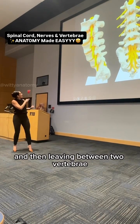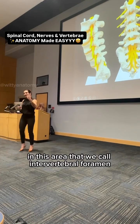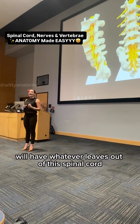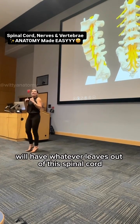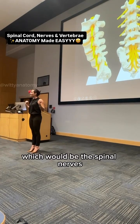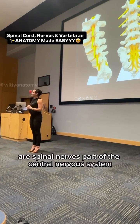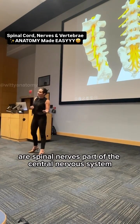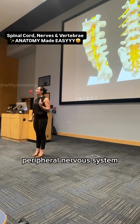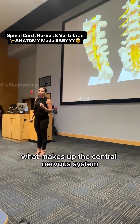Leaving between two vertebrae in this area that we call the intervertebral foramen will be whatever leaves out of the spinal cord, which would be the spinal nerves. Are spinal nerves part of the central nervous system or peripheral nervous system? Peripheral nervous system — the central nervous system is made up of the brain and the spinal cord.